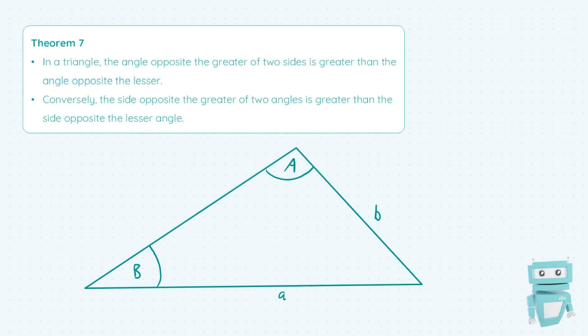So mathematically speaking if we know that the side a is greater than the side b this implies that the angle A is greater than the angle B.